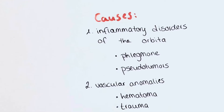Causes of exophthalmos are generally divided into four groups. The first is inflammatory disorders of the orbita. These include orbital phlegmone, sinus cavernosus thrombosis, or pseudotumors of the orbita.